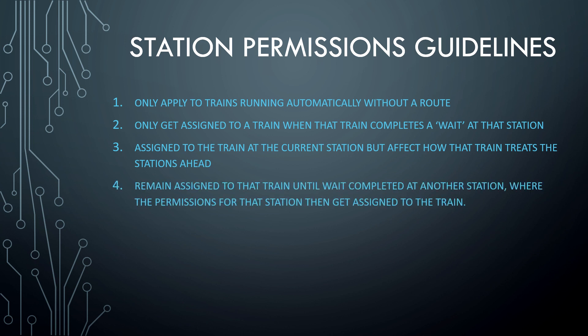Number 4: Station permissions remain assigned to that train until it completes a wait at another station, where the permissions for that station then get assigned to the train and overwrite the previous permissions assigned to that train. So, a train will not adopt the permissions of a station that it is passing through.